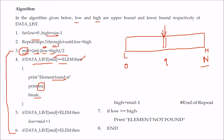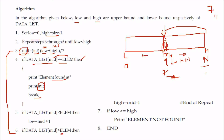For example, say you search for 7 and find 11 at mid. Since 11 is greater than 7, you will not go to the right — you will go to the left. If the element is greater than mid, the low becomes mid plus 1. If you compare 7 with 11 and 7 is less, you know 7 is in the left portion. Mid is already checked, so high becomes m minus 1. This is an iterative process.